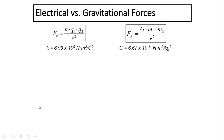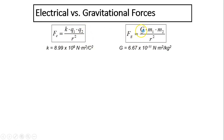Now let's compare electric force versus gravitational force. The two equations are very similar in form: Fe equals K times Q1 times Q2 over R squared, and Fg equals big G times M1 times M2 over R squared. The form is the same.